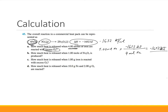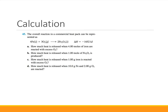Part B asks how much heat is released when 1.00 mole of Fe2O3 is produced. The ΔH of −1,652 kJ is for producing 2 moles of Fe2O3. So: 1.00 mol Fe2O3 × (−1,652 kJ / 2 mol Fe2O3) = −826 kJ of energy.